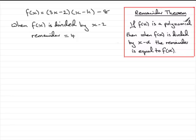If f(x) is a polynomial—a polynomial is something like this where if you expanded it, it goes down or up in ascending powers of x—then when f(x) is divided by x minus alpha, the remainder is equal to f(alpha).